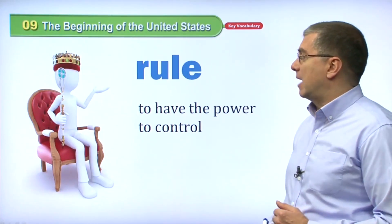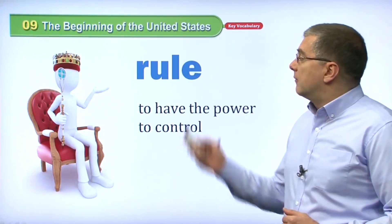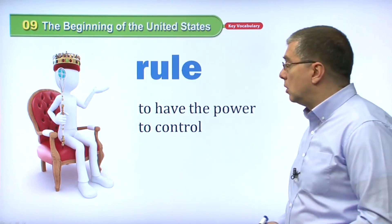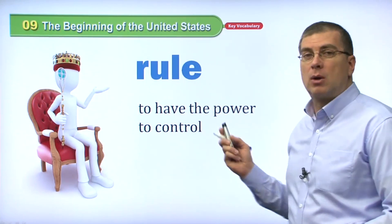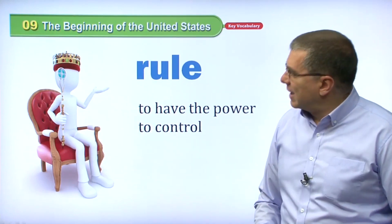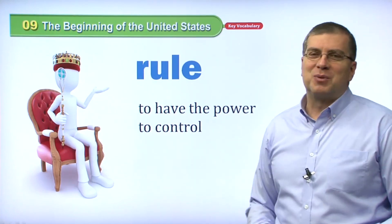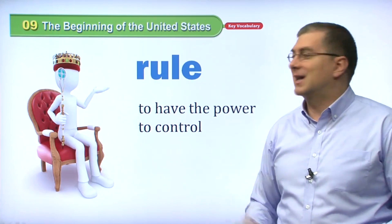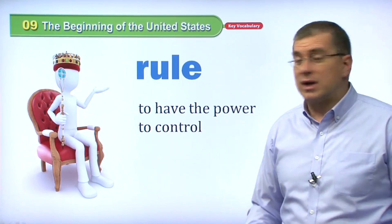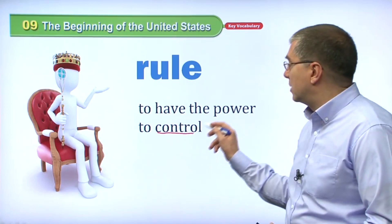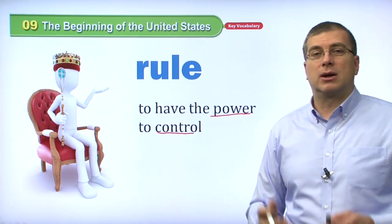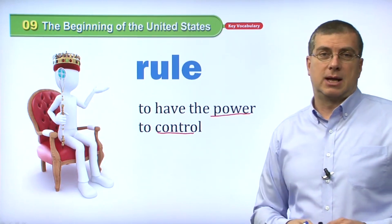Let's take a look at the vocabulary. First, we have the word 'rule.' To rule means to have the power to control. This person looks like a king, right? A king or a queen rules the country. They control the country — they have the power to control the country. So a king or queen rules the country.